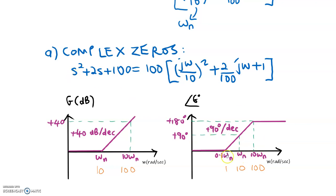Outside this frequency range — for frequencies less than 1, the slope is 0 degrees per decade. And for frequencies greater than 100, the slope is also 0 degrees per decade.